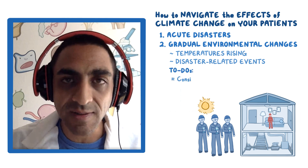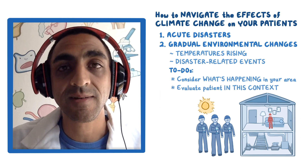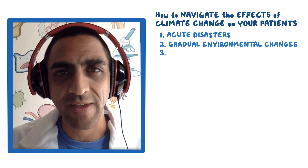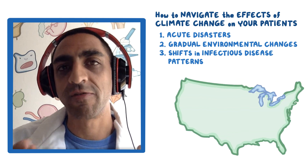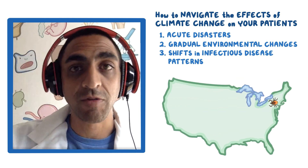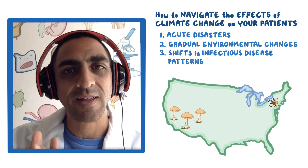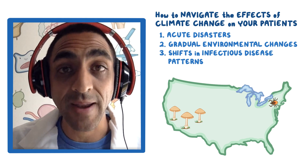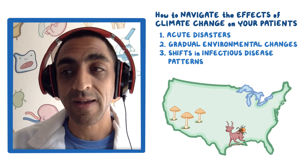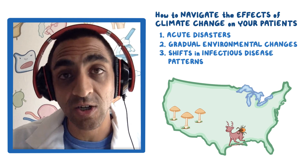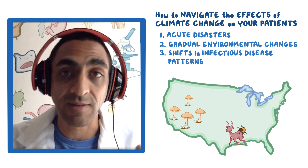The key to-do for environmental changes is to consider what's happening in your environment and evaluate a patient in that context. The third category is shifts in infectious disease patterns. When you think about infections, you might associate them with certain geographies — ticks in the northeastern United States, or certain fungal diseases in specific geographic areas. With climate change, animals are moving to different areas, and with them the ticks are moving as well.